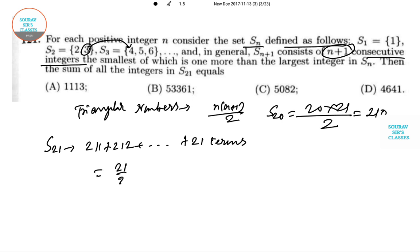Obviously, we can use the formula: 21 by 2 times [2 times 211 plus (21 minus 1) times the common difference]. This is giving us 4641. So option D is correct. I will do more problems in my next video. Thank you.